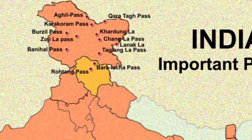Then it is Baralacha Pass. It is a high mountain pass in the Zanskar range connecting Lahaul district in Himachal Pradesh to Ladakh in Jammu and Kashmir. It is situated along the Leh-Manali Highway.